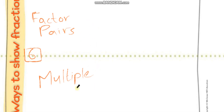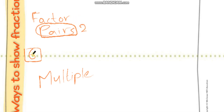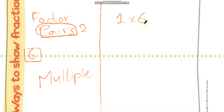You have to understand the difference between factor pairs and multiples. So what are the factor pairs of 6? Pair means two — you have to find two numbers that when you multiply them you get 6. Like 1 times 6 — that is a factor pair. Another factor pair of 6 is 2 times 3.